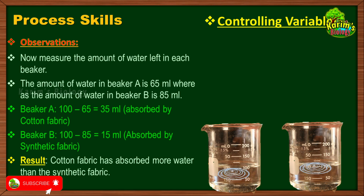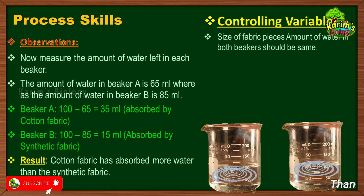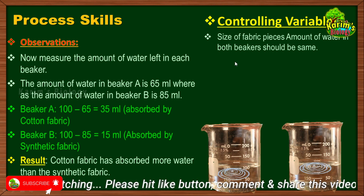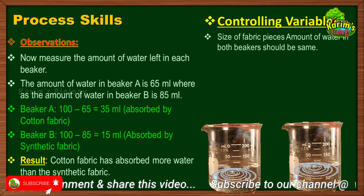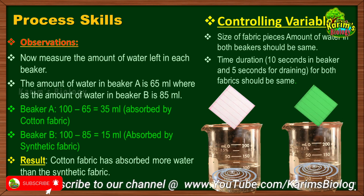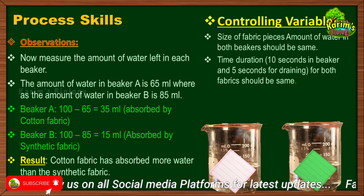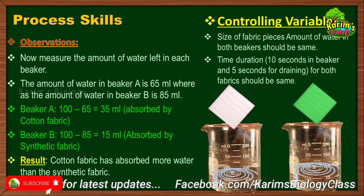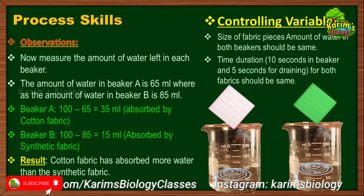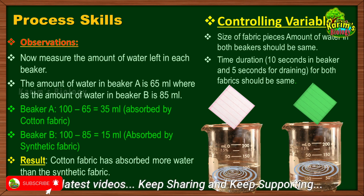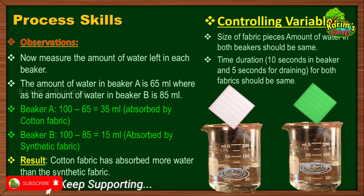This is how she used the process skills. Let us recap the variables: the first variable is the size of the fabric pieces — both must be equal. The second is the amount of water in the beakers — both must have 100 ml. The third is the time duration — fabrics must be kept in water for exactly 10 seconds, then drained for exactly five seconds. These are the variables. In my next session I will explain about steps in reading. Thank you.